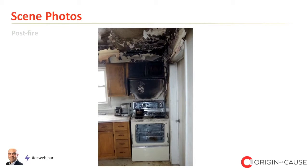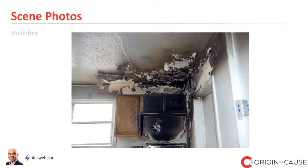Here is another photograph showing the electric range straight on. You can see damage to the painted ceiling surface, and a V-pattern extending above the electric range showing where the fire damage is. Here is an example of the damage sustained by the ceiling — if you remember from the video footage, the fire progressed up into the ceiling space and there were flames there for quite a while.